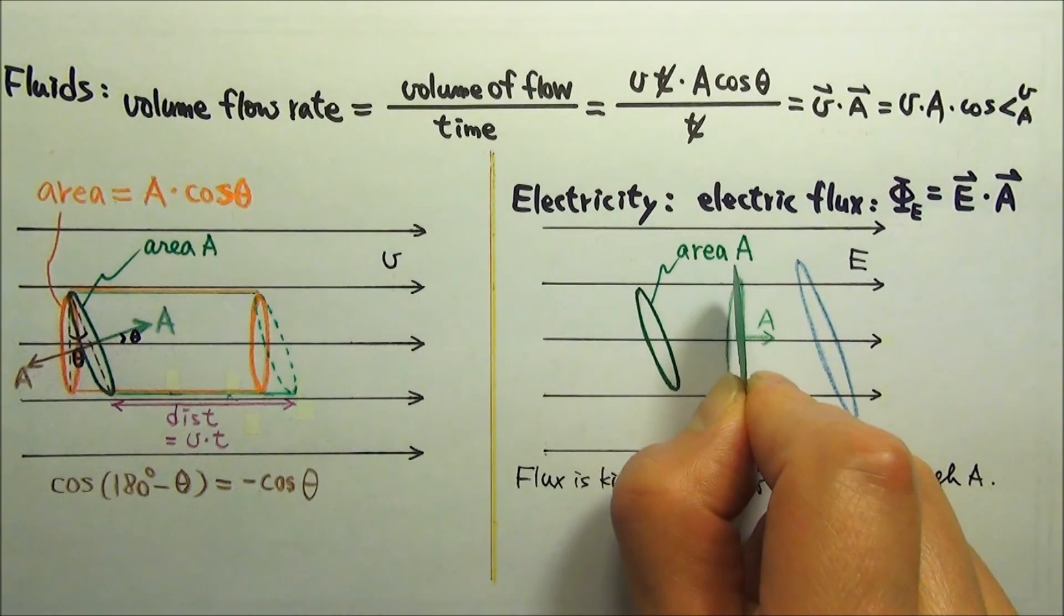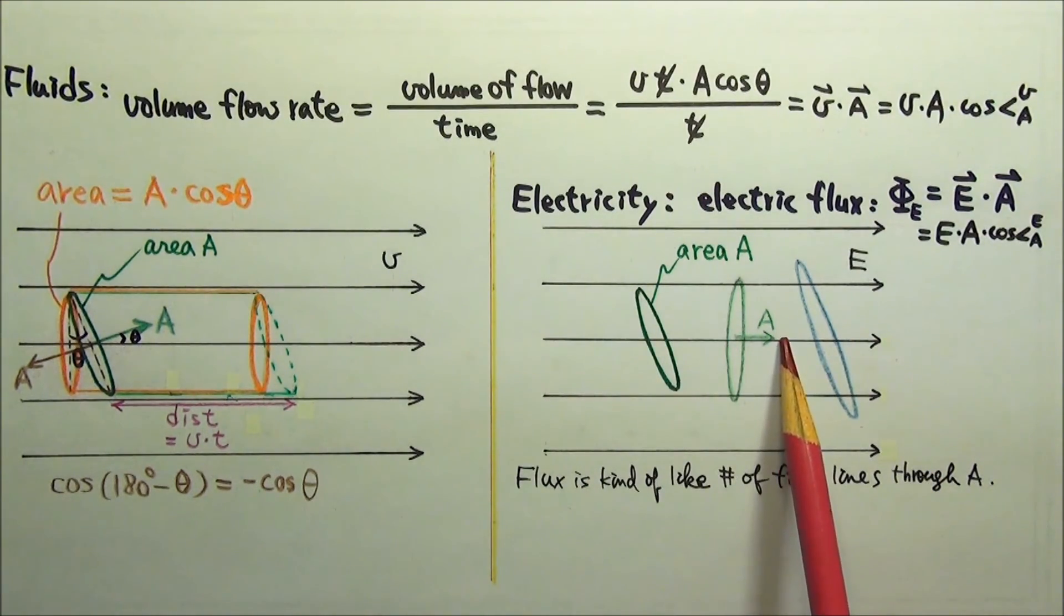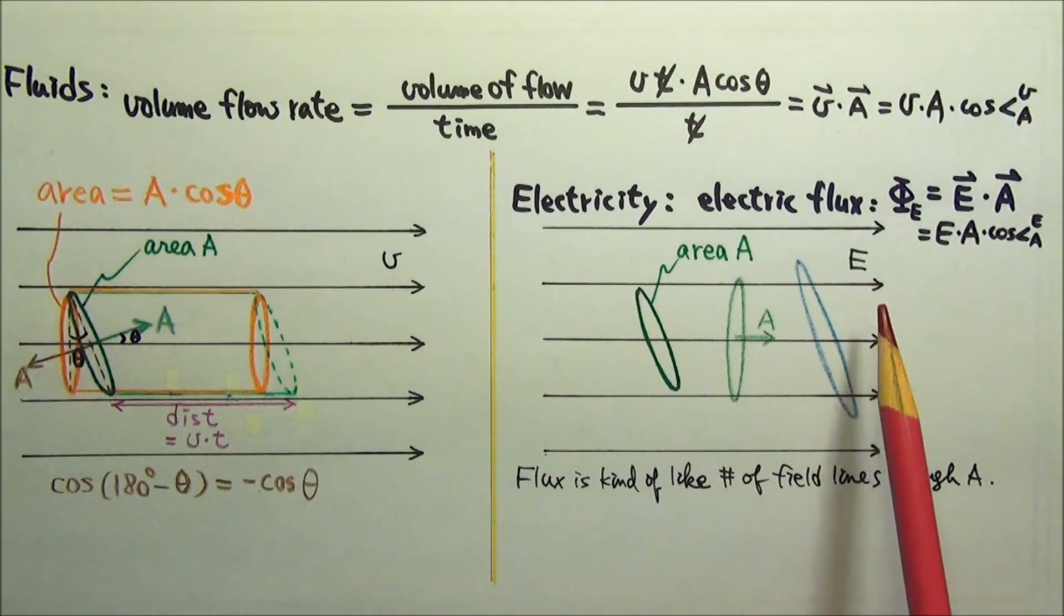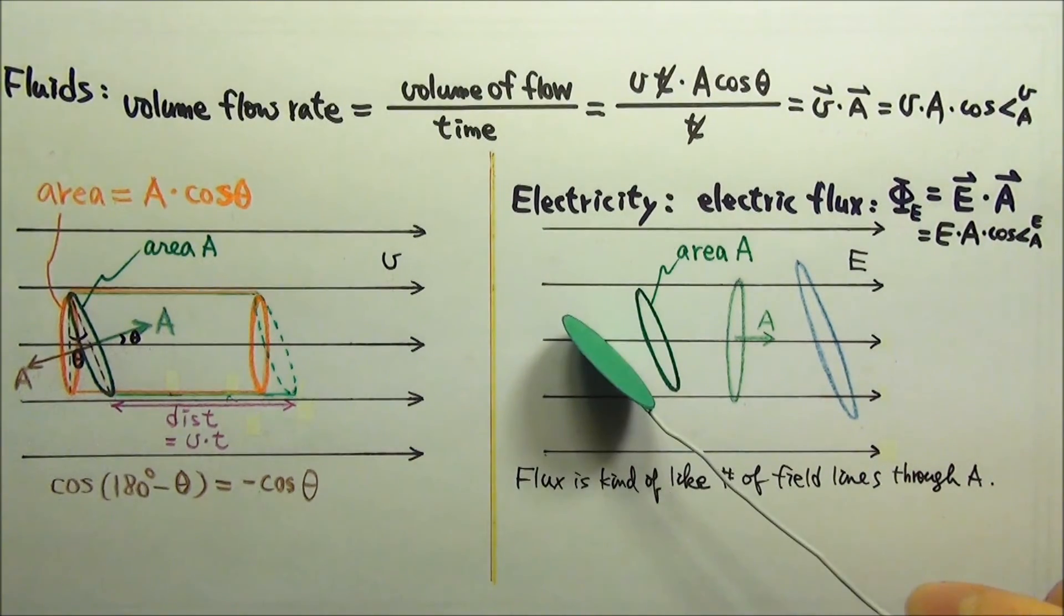When we turn the area into this orientation, the normal vector is in the same direction as the electric field. The angle between E and A is 0 degrees, so the cosine value is 1. Out of all orientations, this is the one to have maximum flux, with most field lines go through the area.